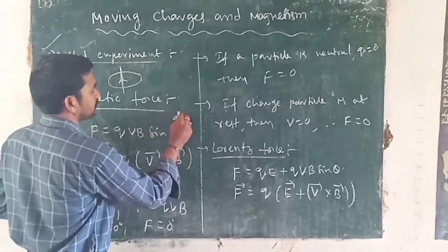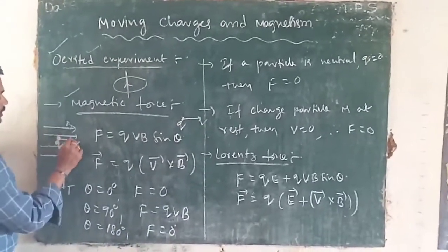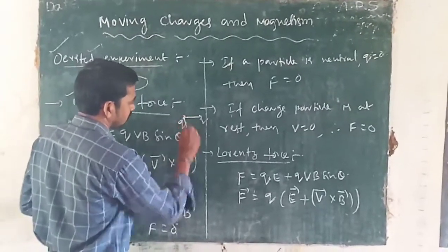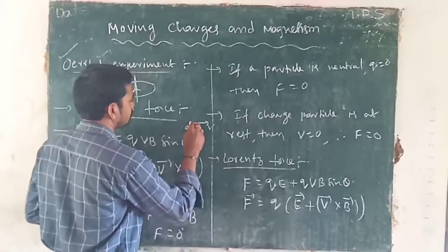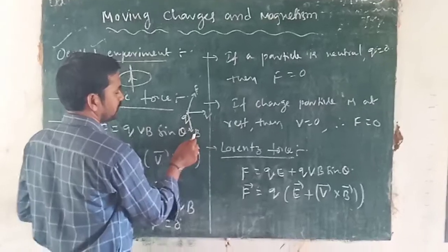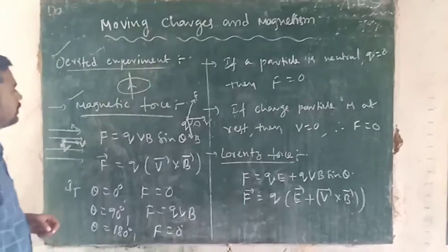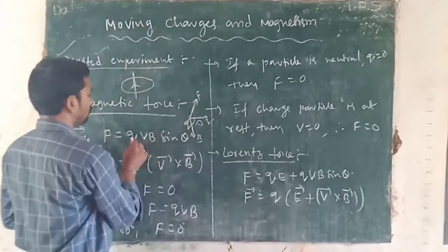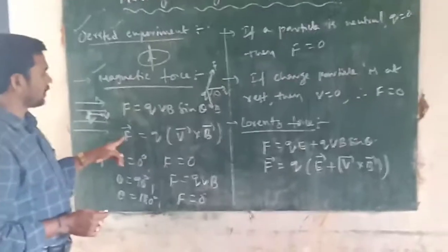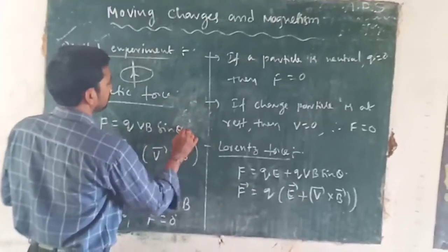Here, Q is the charge, V is the velocity of the particle, and B is the magnetic field. When a charged particle is moving with velocity V in a magnetic field, the force is F = QVB sin θ, where θ is the angle between V and B. In vector form, F⃗ = Q(V⃗ × B⃗).